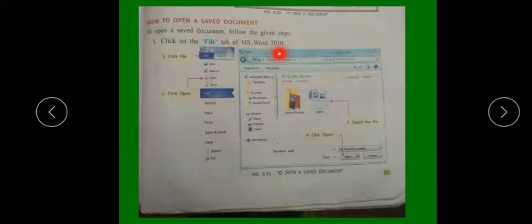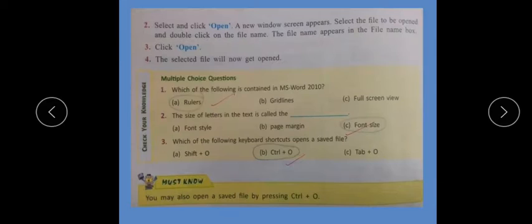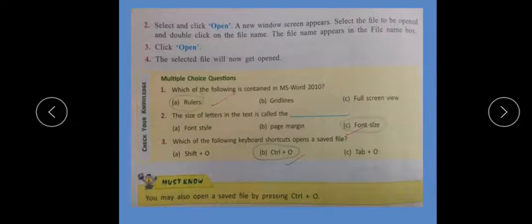How to open a saved document. To open a saved document, follow the given steps: click on the File tab of MS Word 2010. A new screen window appears. Select the file to be opened and double-click on the file name. The file name appears in the file name box. Click Open. Your saved file will now get opened.